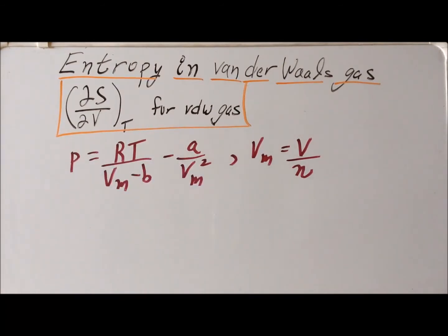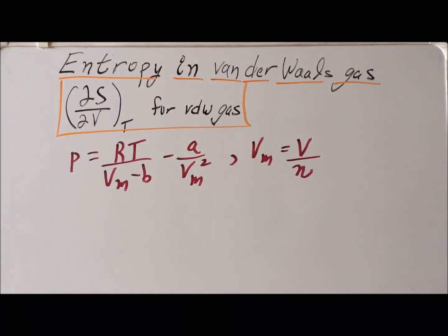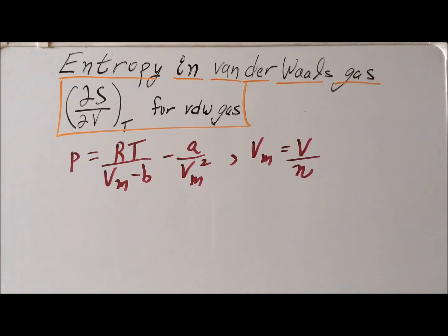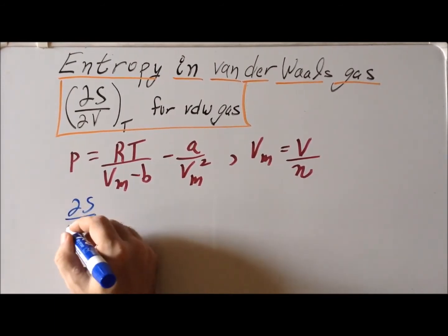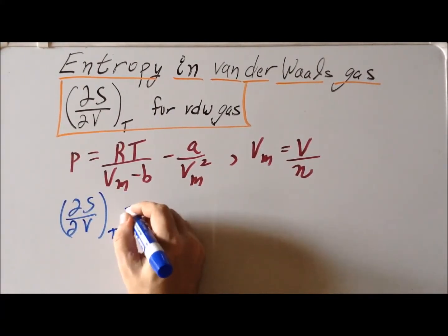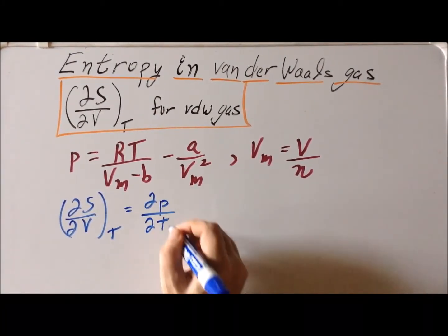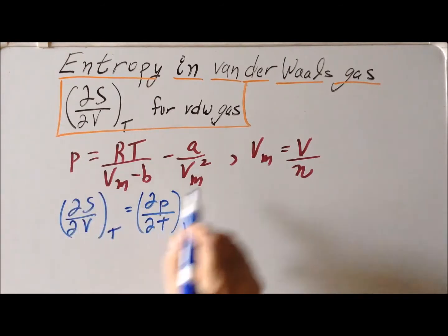Now, looking at this equation, it might seem very difficult to calculate this particular partial derivative, for no other reason than that the variable S does not appear even once in the equation of state. But we can use one of the Maxwell relations to help us out. One of them tells us that the change in entropy with respect to volume at constant temperature — which is precisely what we want — equals the change in pressure with respect to temperature at constant volume, and this derivative we can calculate easily.